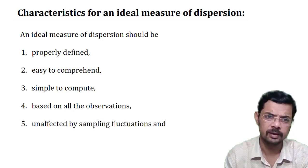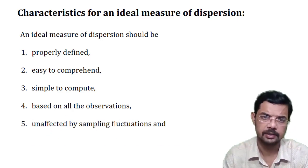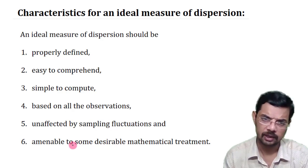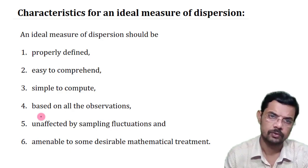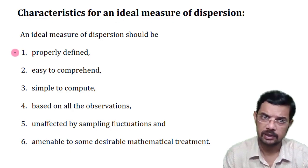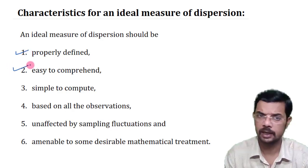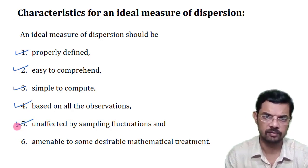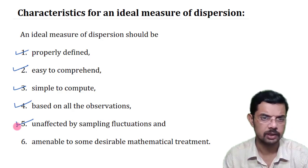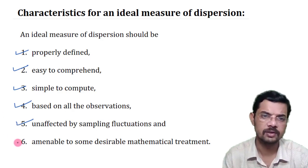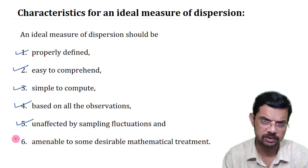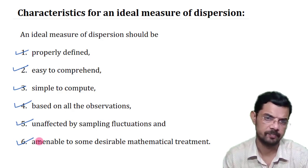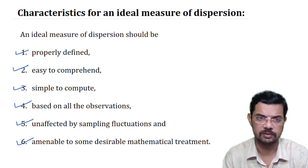Fifth, the measure should be unaffected by sampling fluctuations — even if fluctuations occur in the sample, the measure should not be affected. That is what is desired, though not always achievable. Sixth, it should be further usable in mathematical treatment or applicable in other statistical applications.